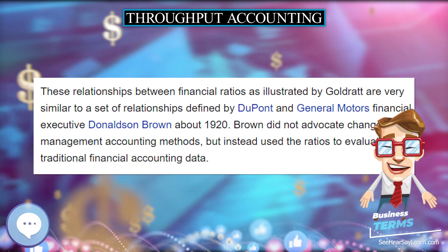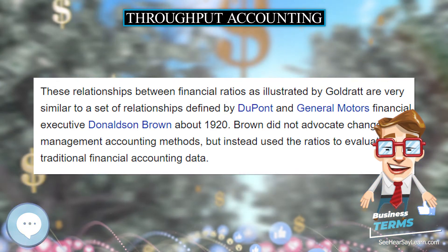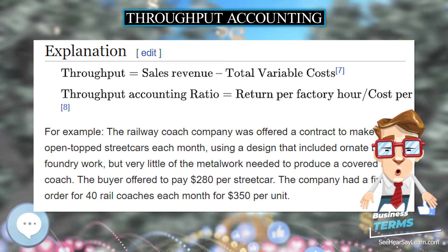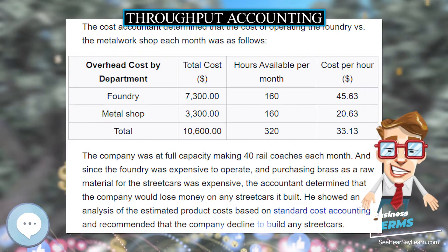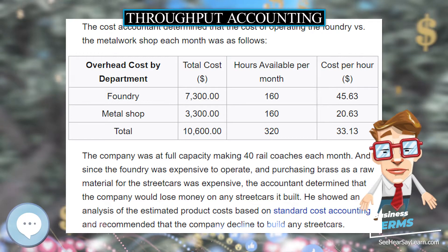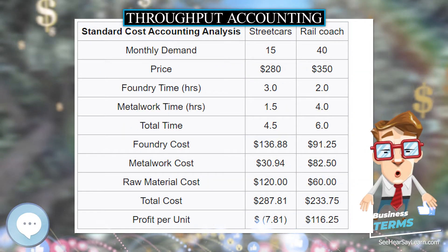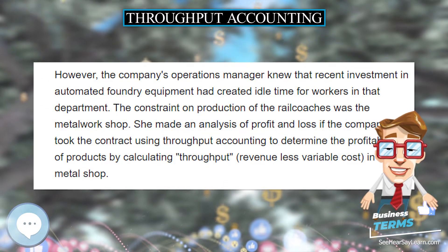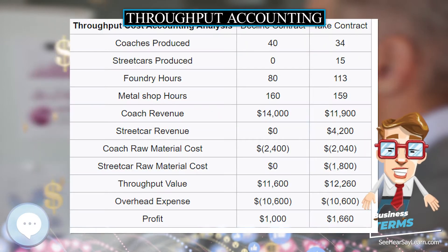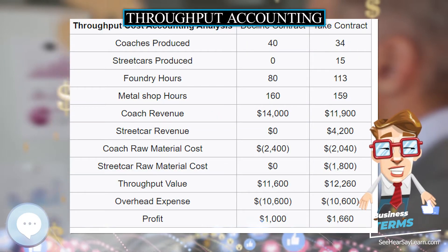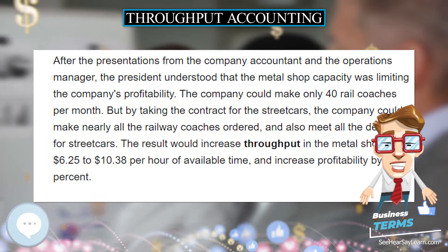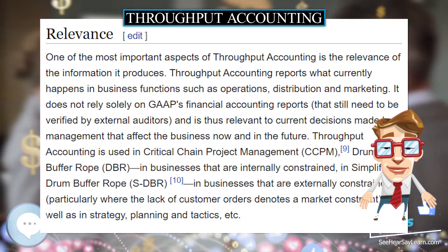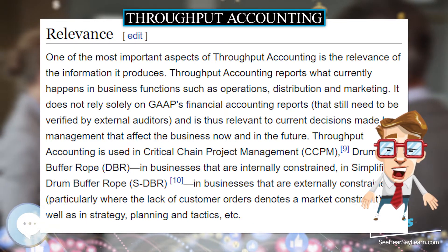Throughput accounting is a management accounting technique used as the performance measure in the Theory of Constraints (TOC). It is the business intelligence used for maximizing profits. However, unlike cost accounting that primarily focuses on cutting costs and reducing expenses to make a profit, throughput accounting primarily focuses on generating more throughput. Conceptually, throughput accounting seeks to increase the speed or rate at which throughput is generated by products and services with respect to an organization's constraint, whether the constraint is internal or external to the organization.